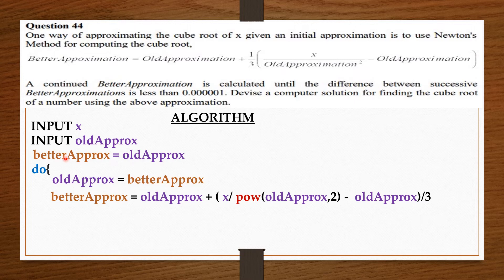Then when we came to the do-while loop, we gave it back to oldApprox. Then we put that oldApprox into this formula to compute for the betterApprox.